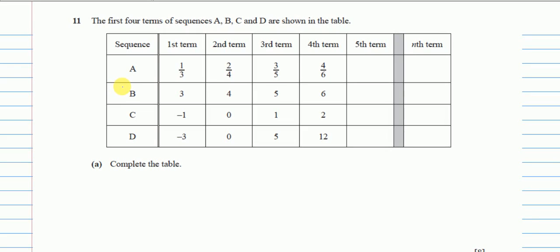Question number 11, and it is on sequences. We are given four sequences and we have to write the next term, and then we have to write the nth term — which means the formula we can use to find any term.